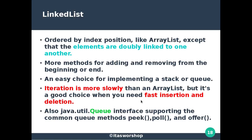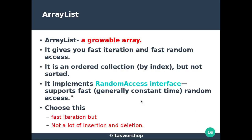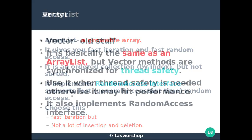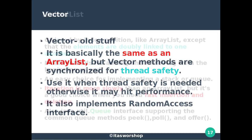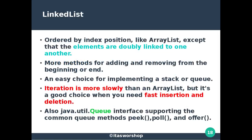So we have considered three things: ArrayList, which is a growable array with fast iteration but slow insertion and deletion; Vector, which is the same as ArrayList but with synchronized methods for thread safety; and LinkedList, in which elements are linked to each other — iteration is slow but insertion and deletion are faster. These are the things under the list interface and we will take examples for these classes separately.